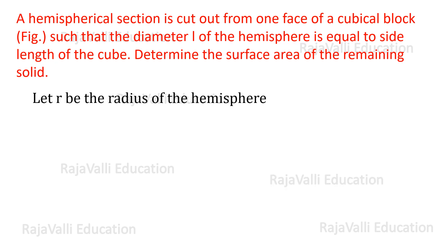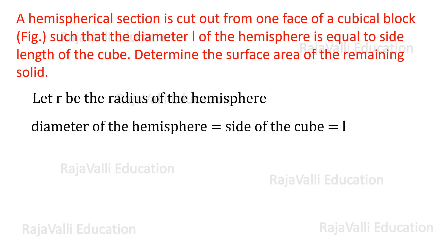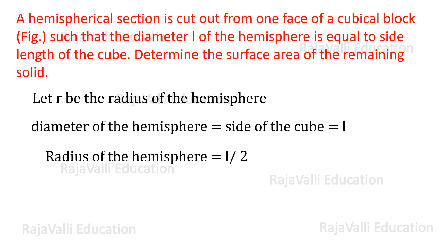First, we consider the given information. The diameter of the hemisphere is equal to the side of the cube. The side of the cube is L, so the radius of the hemisphere is L/2.